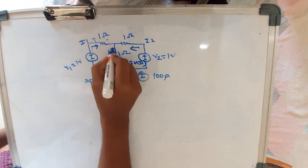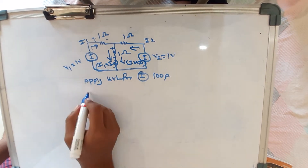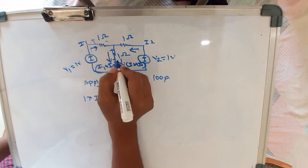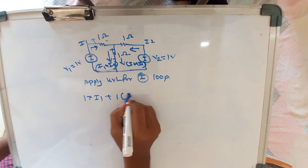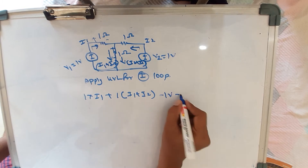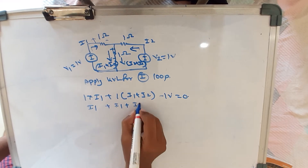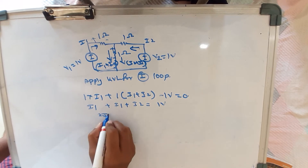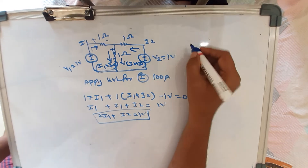Starting from the voltage source and going around the first loop — current flows from plus to minus — for the one-ohm resistance the current is I1, giving 1 times I1. Then for the shared one-ohm resistance the current is I1 plus I2, giving 1 times (I1 plus I2), minus 1 equals 0. So I1 plus I1 plus I2 equals 1 volt, which gives 2I1 plus I2 equals 1 volt.